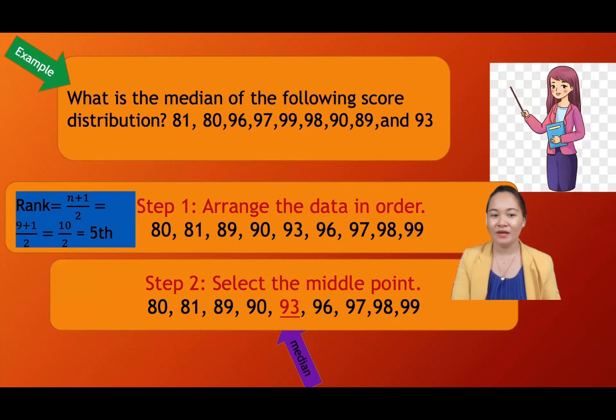We have here 80, 81, 89, 90, 93, 96, 97, 98, 99. Since there are nine data sets, and this is an odd number. Nine is an odd number.